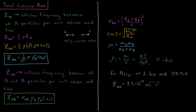The factor of one-half comes because of this: if we have particle one of A and particle two of A and they collide with one another, that collision is part of Z1 but it's also part of Z2. So whose collision counts? The answer is both and neither, because that collision does count for each of them, but it should only count once for the total collision frequency. So we have to account for that one-half because each time an individual particle is colliding, it's colliding with another particle whose collision frequency also counts towards that total.